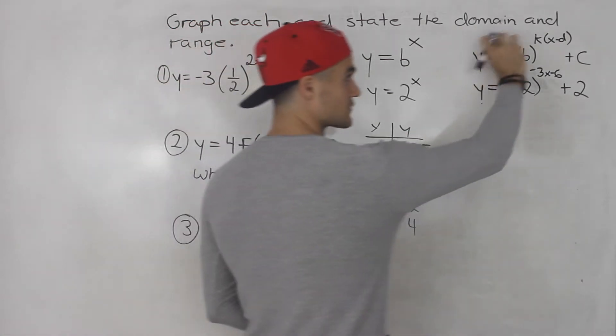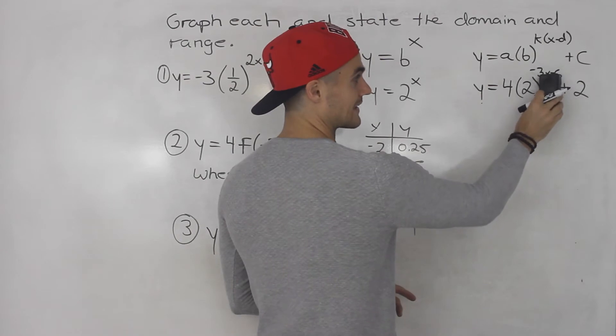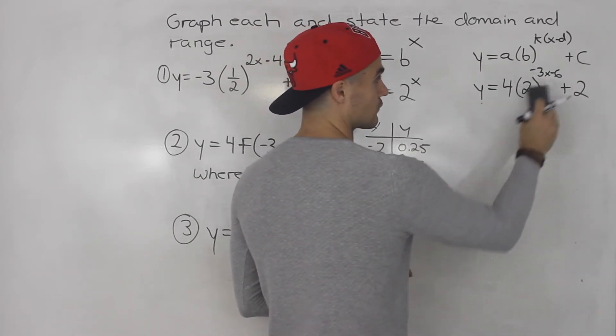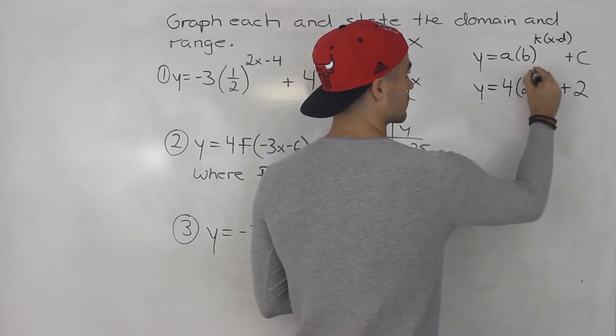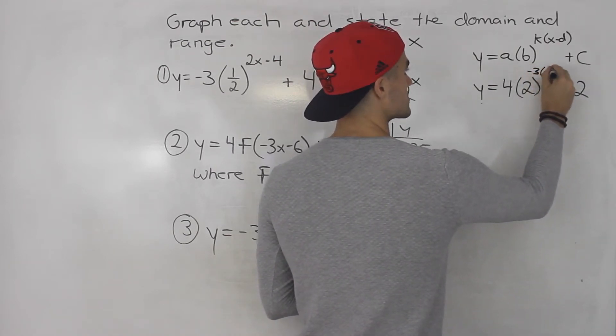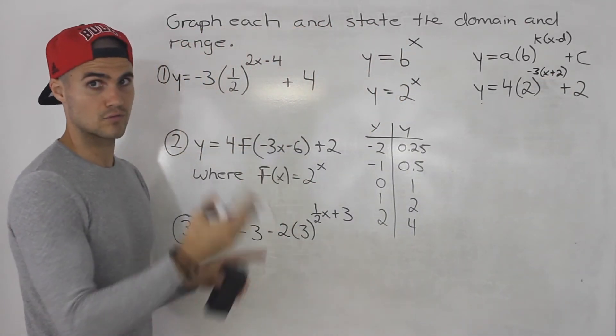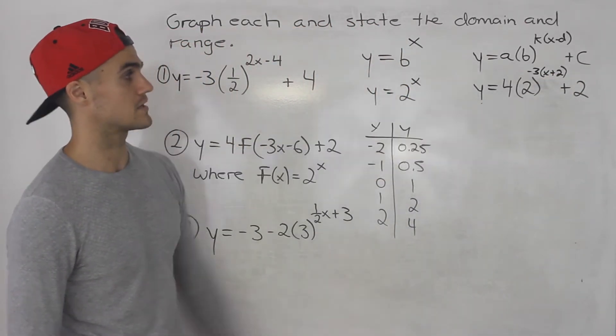So to get it into this format you want to make sure that that k value is by itself, you want to make sure it's factored out so you got to factor out negative 3. So if you take out a negative 3 you'd be left with x plus 2. Right, negative 6 divided by negative 3 when you take it out ends up being positive 2.